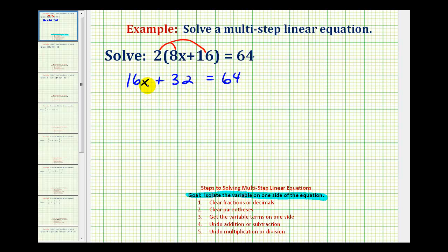Notice how we only have one variable term, and it's on the left side of the equation, so we want to isolate the x on the left side. To do this, we have to undo this addition, and since 16x means 16 times x, we also have to undo this multiplication.